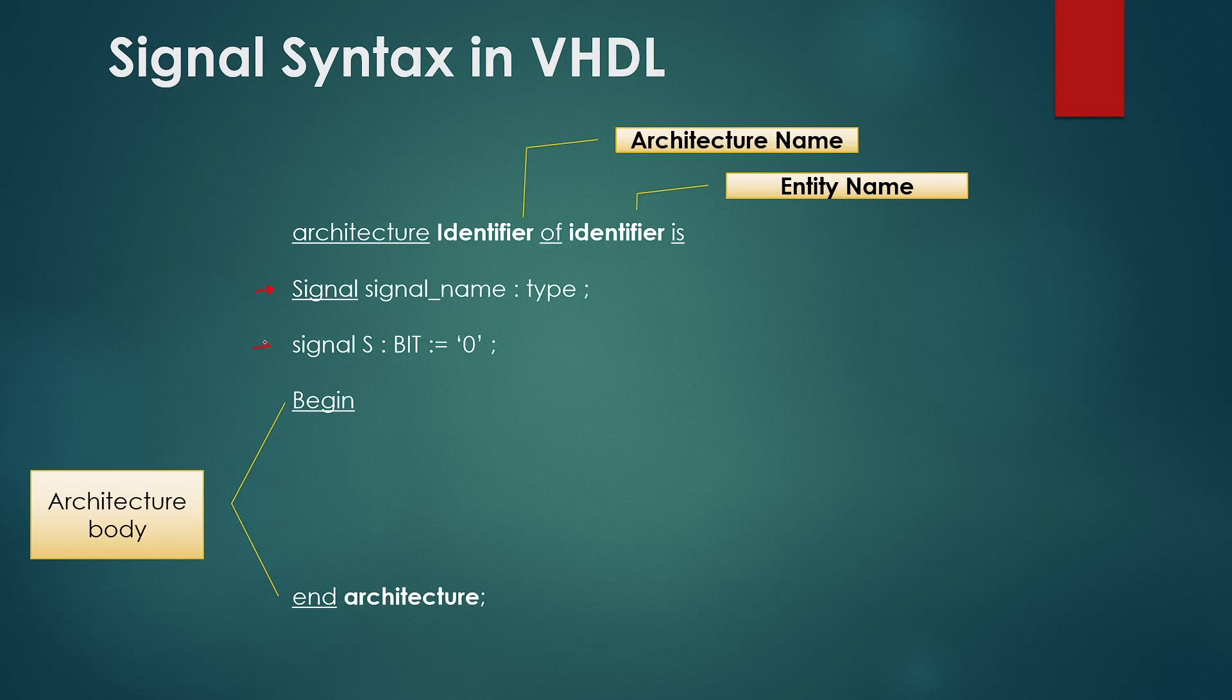You can define the default value of your signal while declaration if you want. For this after giving the signal type write colon equals to and then give the default value of signal and then semicolon. You can refer the example in screen for signal S which is bit type and the default value is set as 0.